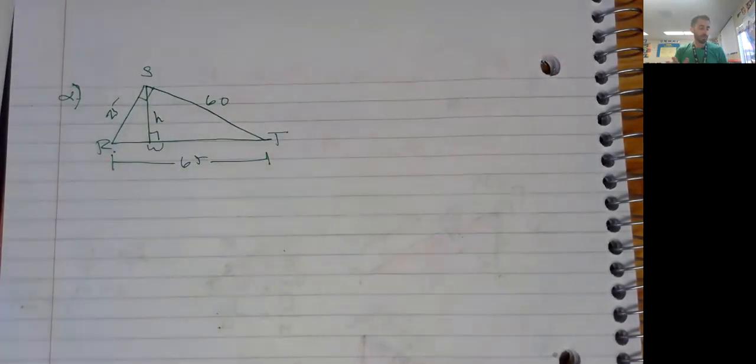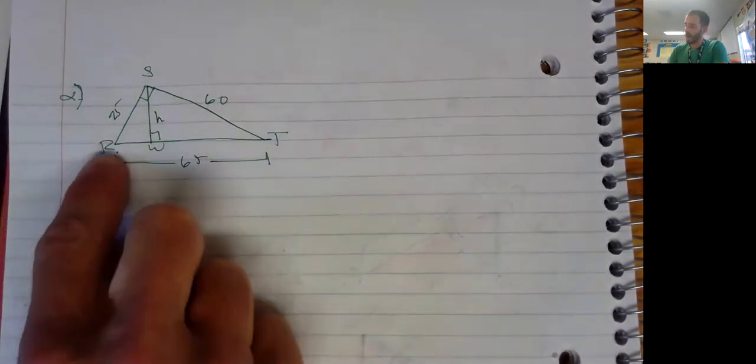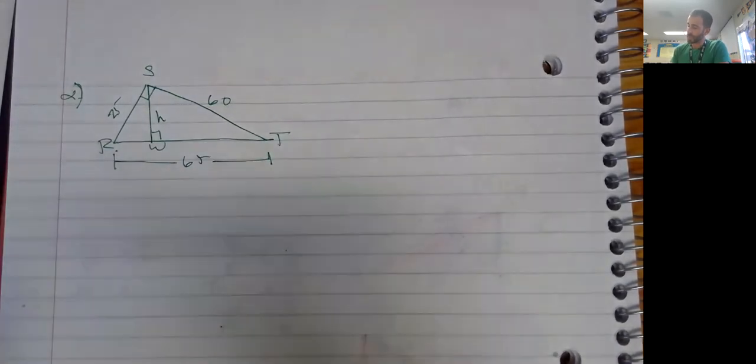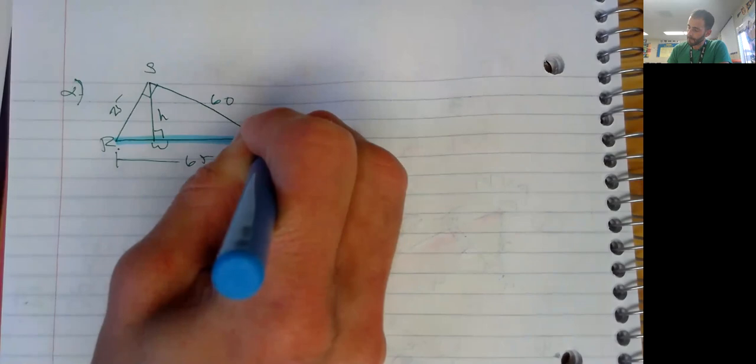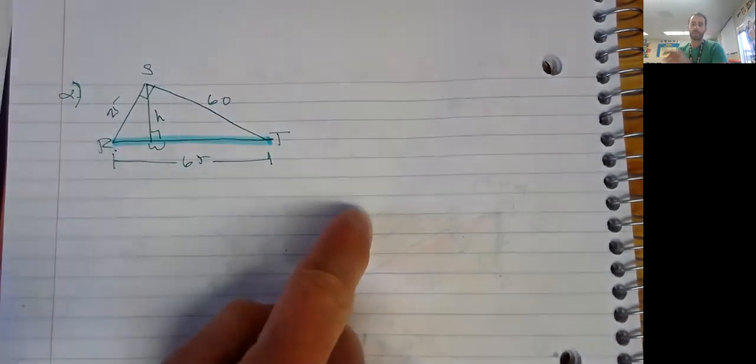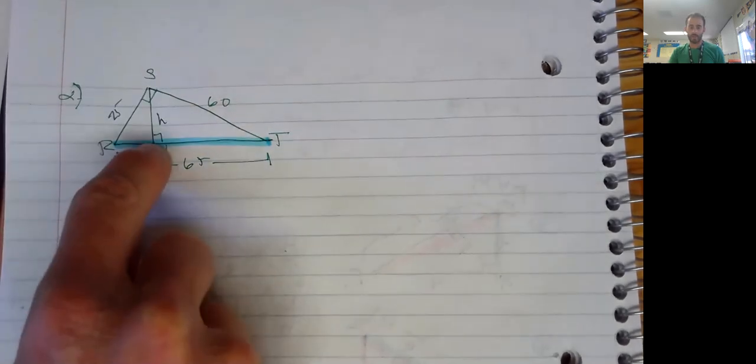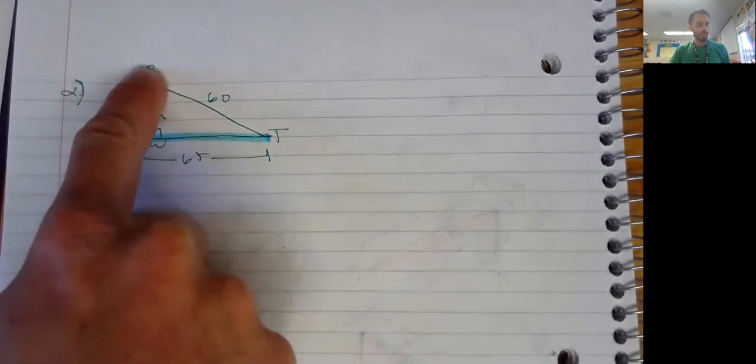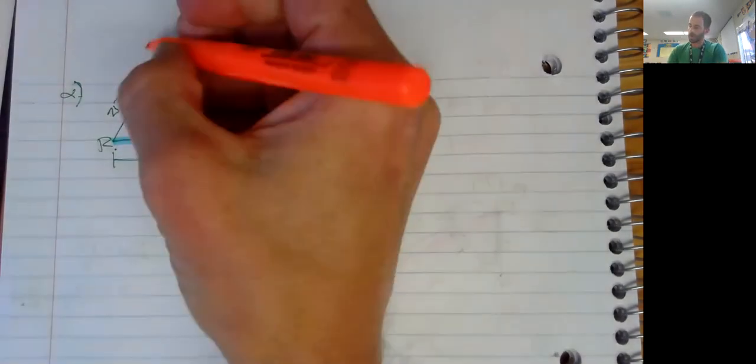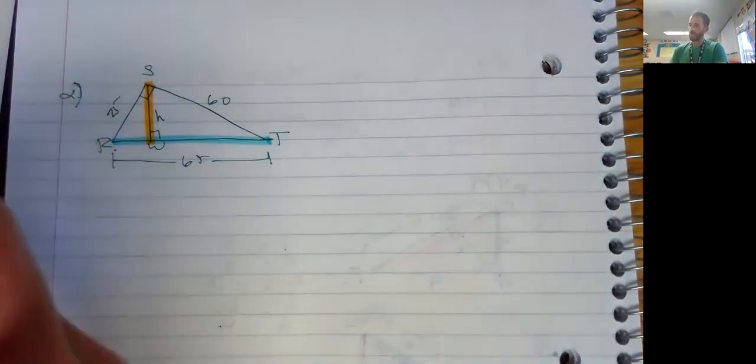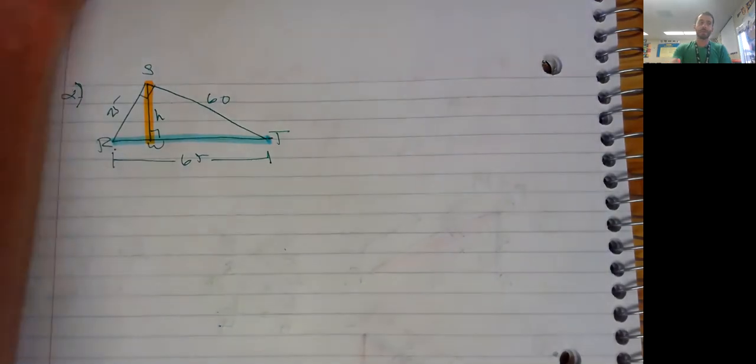All right. So again, we have a roof here. We have the base of the roof is 65 feet. One side of the roof is 25 feet. The other side of the roof is 60 feet. This is a right angle. This is a right angle because we want to know the height at the tallest part of the roof. All right. Answer that for me in a program.